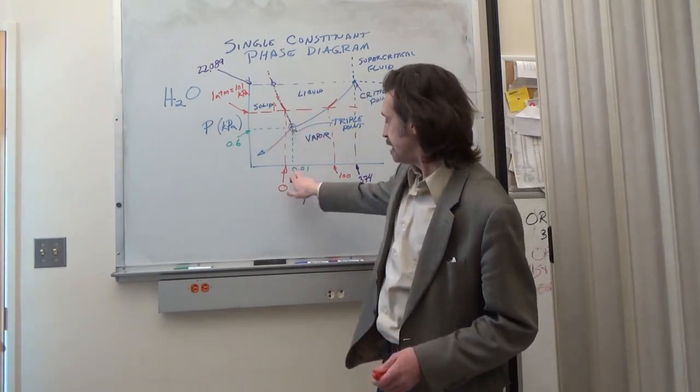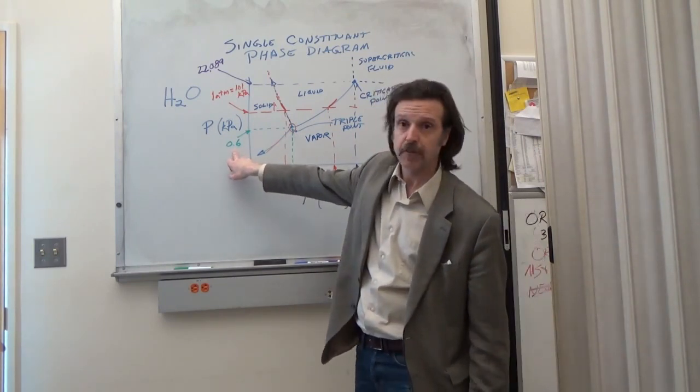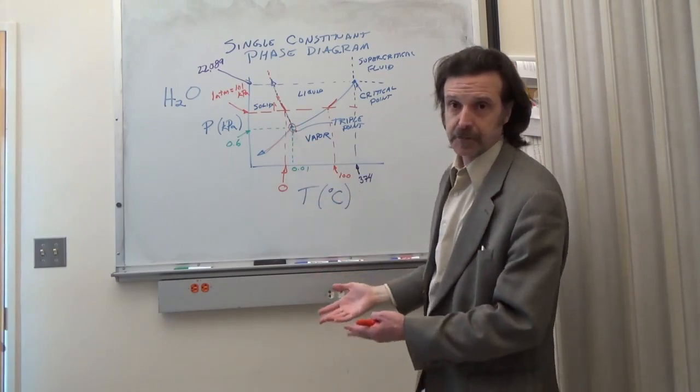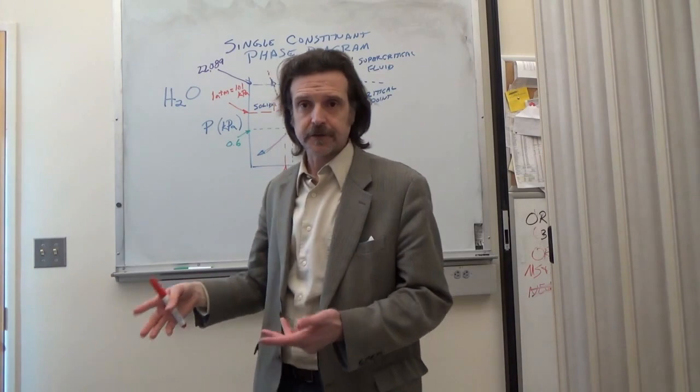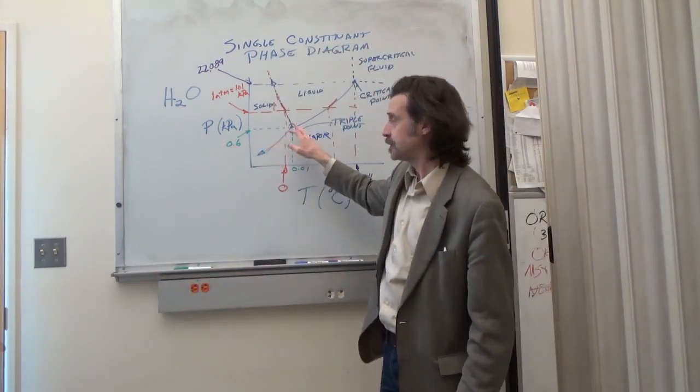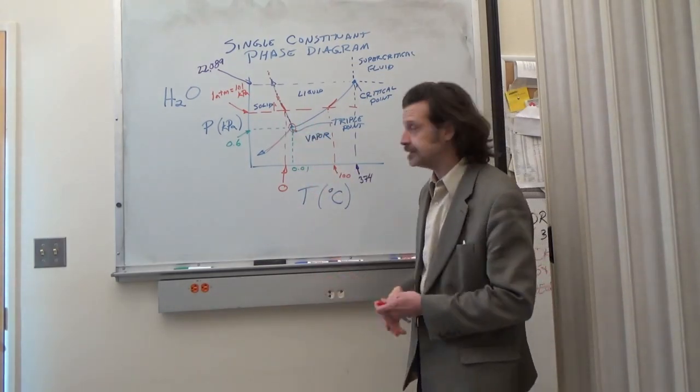It is the temperature 0.01 and pressure 0.6. At that, all three phases are present at the same time and there are many YouTube videos that you can look at in which people set the pressure and temperature in order to achieve a triple point for various substances.